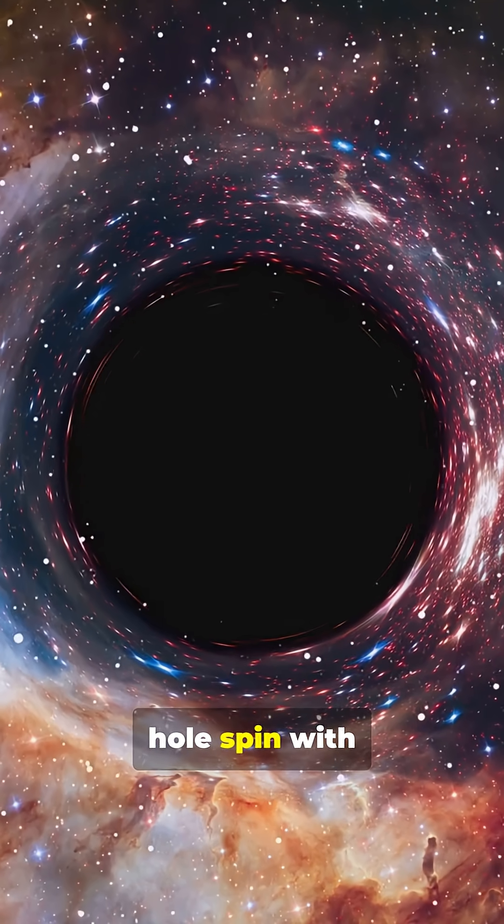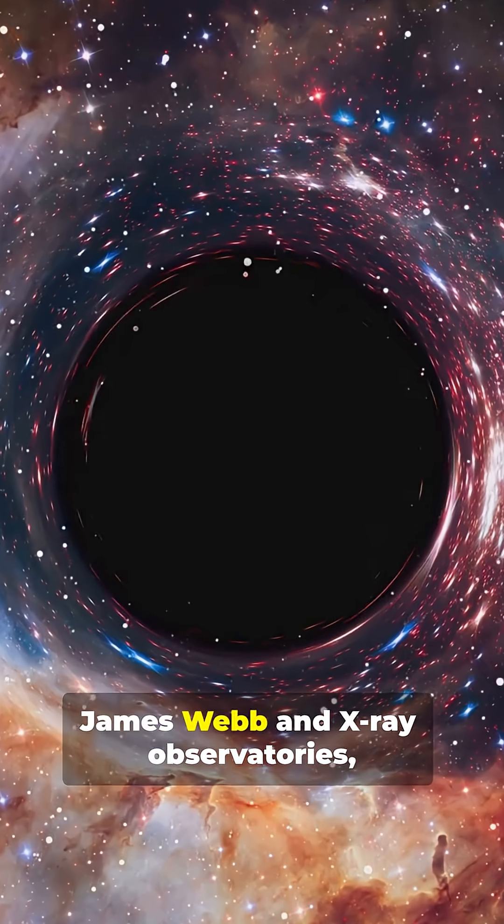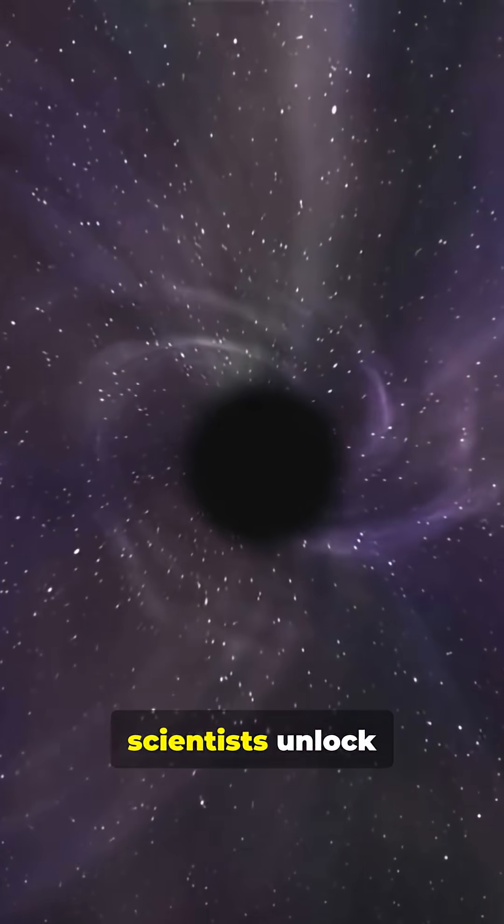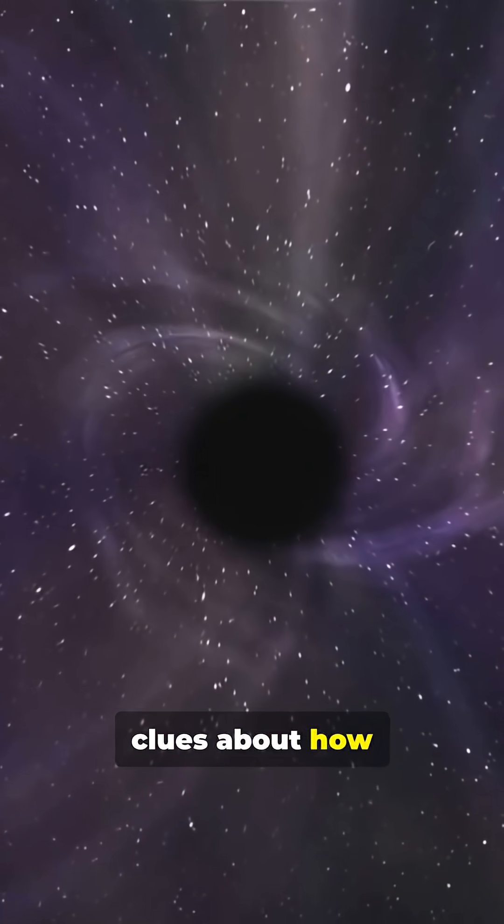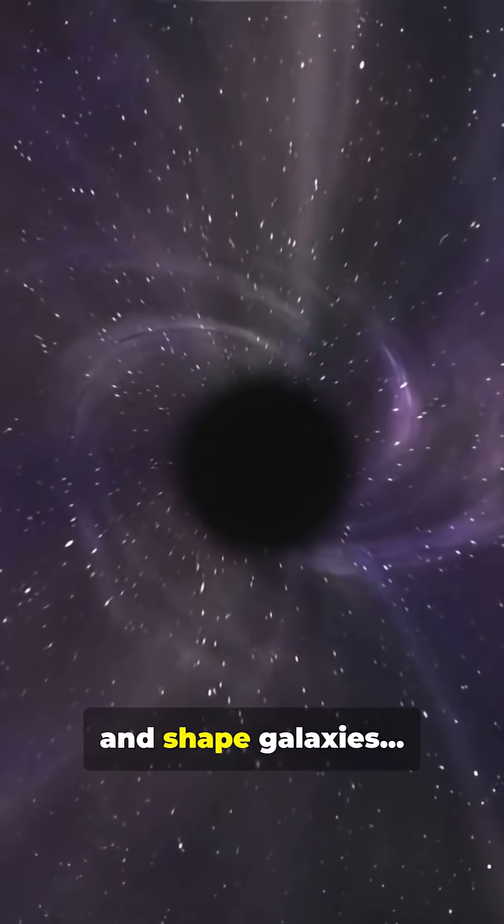By measuring black hole spin with telescopes like James Webb and X-ray observatories, scientists unlock clues about how black holes grow, merge, and shape galaxies.